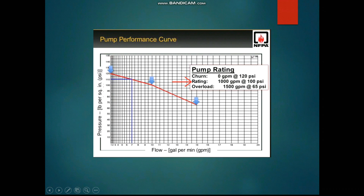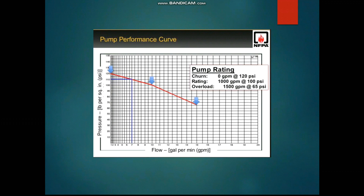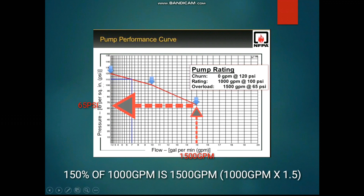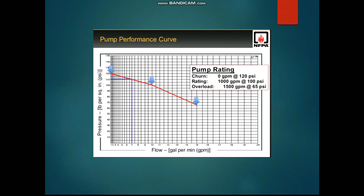The fire pump is rated for 1000 GPM at 100 PSI — this value comes from hydraulic calculations. The overload condition states that at 150% of rated flow (1500 GPM), pressure should not go below 65 PSI. On the performance curve chart, the X-axis is flow and Y-axis is pressure. At 1000 GPM the pressure is 100 PSI (rated point); at 1500 GPM the pressure must remain at or above 65 PSI. This condition is one of the most important criteria to satisfy when selecting a pump.